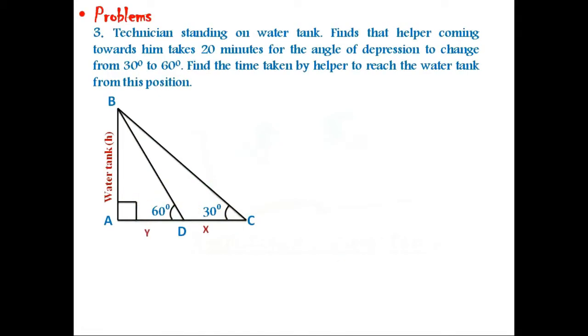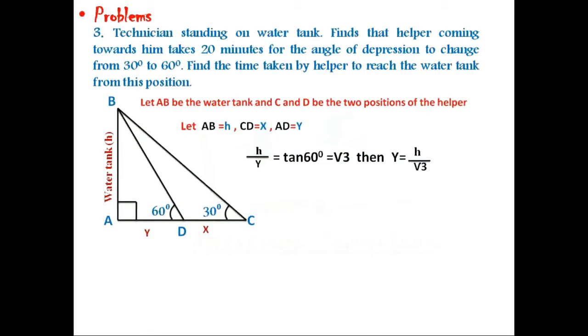Let X and Y be the distances. If we consider triangle ABD, H by Y equals tan 60°. As we know, tan 60° equals root 3, then H by Y equals root 3, and Y equals H by root 3.